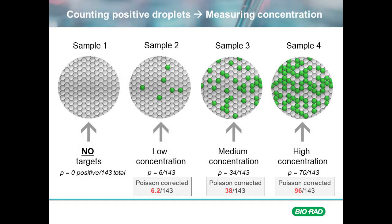Applying Poisson correction, the other three samples would slightly change. Sample 2 would change to 6.2 copies instead of the 6 copies we predicted. That is close, but the 0.2 difference is for accuracy and is due to the fact that even though we only have 6 positive events, there is a small probability that two of our target molecules may have ended up in the same droplet. For the same reason, sample 3 is likely to contain 38 molecules of interest instead of 34, and sample 4 96 instead of the 70.